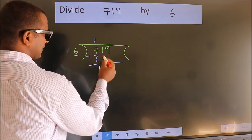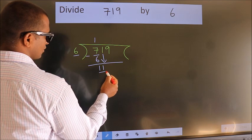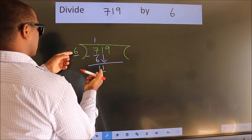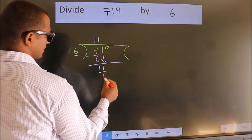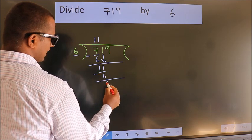After this, bring down the beside number. So 1 down, making 11. A number close to 11 in the 6 table is 6 once 6. Now we subtract. We get 5.